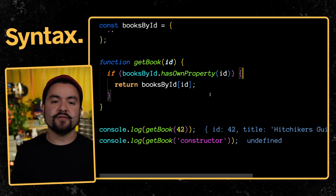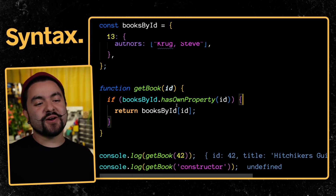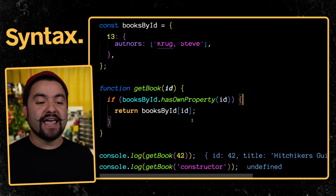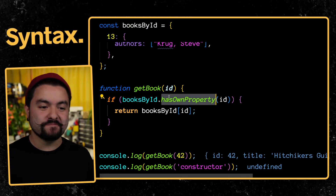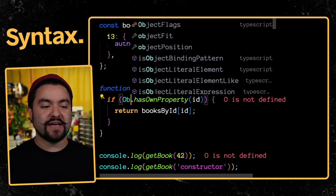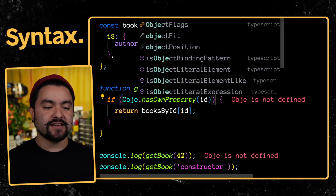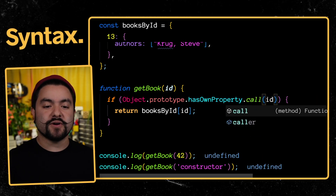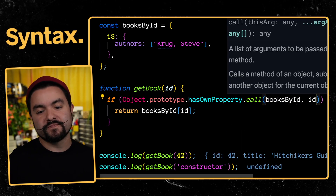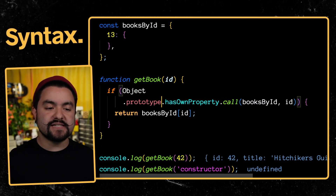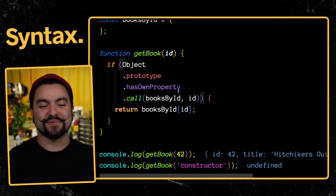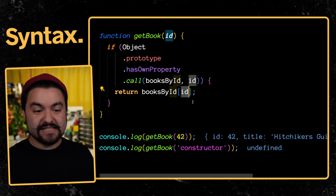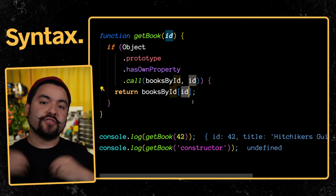This is why you typically see guarded checks around this access in a code base. You might say if booksById.hasOwnProperty — meaning, does this object have this property without looking up the prototype chain? And if it does, return it. But there are scenarios where you can create an object that doesn't inherit from the object prototype, and in that case it won't have the hasOwnProperty method. So you often see Object.prototype.hasOwnProperty.call(booksById, argument) to make sure you're only looking at properties on the object itself, not the prototype chain.